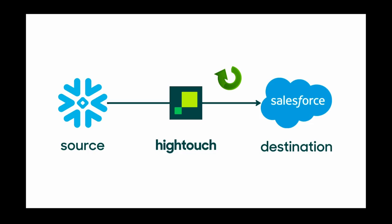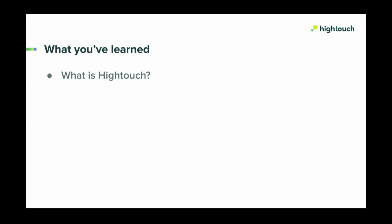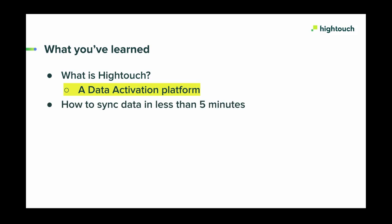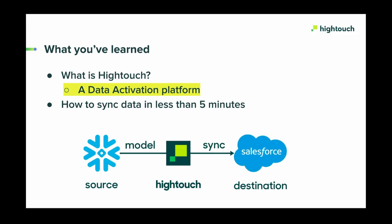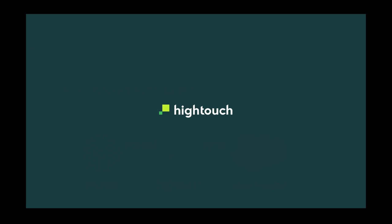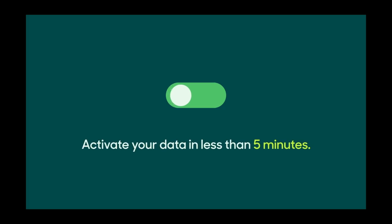Between syncs, HiTouch automatically identifies the incremental changes in your data model, so we're only sending necessary updates and not making excessive API requests. To wrap up, you got a quick overview of what HiTouch is — a data activation platform — and how you can quickly sync data from your data warehouse or other sources into destinations like CRMs, marketing automation tools, and more. We walked through setting up a model in HiTouch and using it to sync data from Snowflake to Salesforce. This is just one of the countless use cases for HiTouch. Visit HiTouch.com to learn more, book a demo, or jump right in. Your first destination is always free.